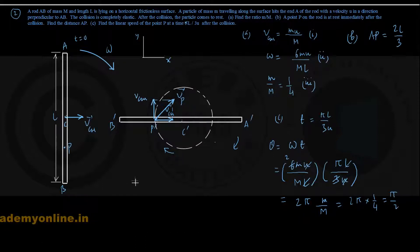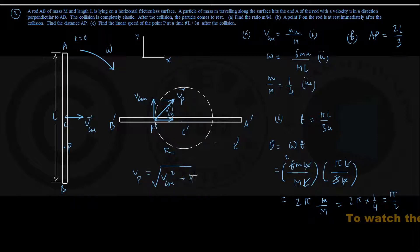And as you can see easily from this figure, by applying parallelogram law, VP is coming out to be in magnitude VCM squared plus VCM squared, and the whole thing under square root.